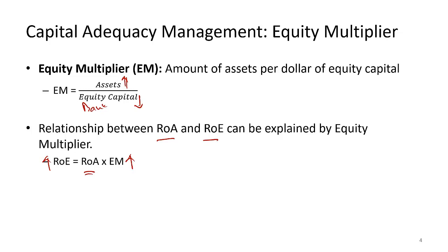A higher equity multiplier can be achieved by increasing assets or by decreasing equity capital through share buybacks. This is exactly what happened after the 2017 Trump tax cuts — banks and corporations used their savings to buy back shares, reducing equity capital, increasing the equity multiplier, and boosting returns on equity for shareholders.